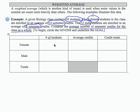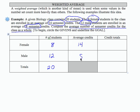So let's create a table and fill it in — that will help us understand the data set and how we can find the weighted average. There are 8 female students in the class and 12 male students, giving us a total of 20 students. The females are enrolled in an average of 14 semester credits, and the males are enrolled in an average of 8.